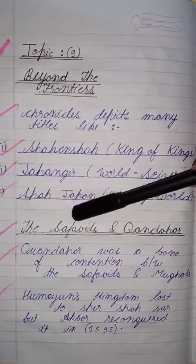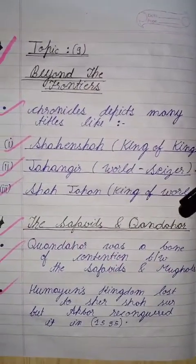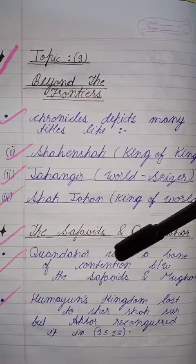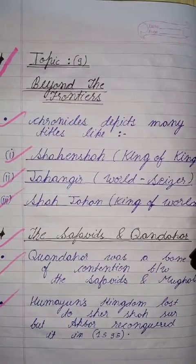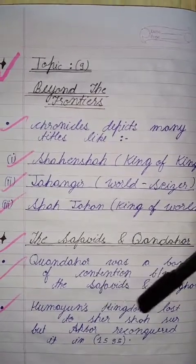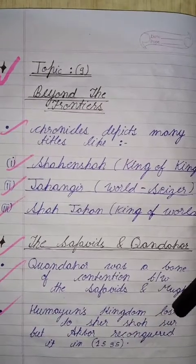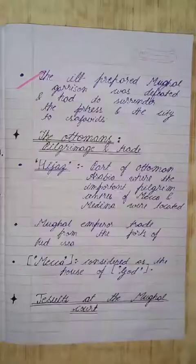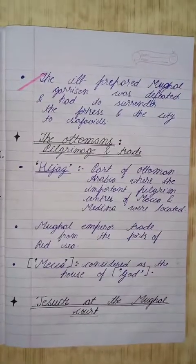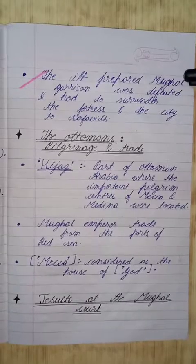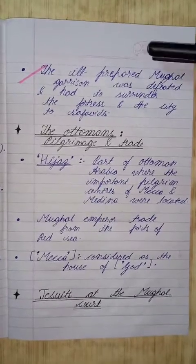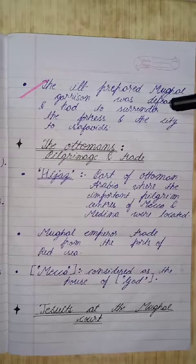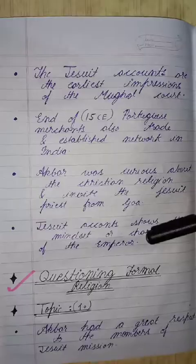The next topic is the Safavids and Kandahar. Kandahar was a bone of contention between the Safavids and the Mughals. Humayun's kingdom lost Kandahar to Sher Shah Suri, but Akbar reconquered it in 1595. Later, the ill-prepared Mughal garrison was defeated and had to surrender the fortress and the city to the Safavids.